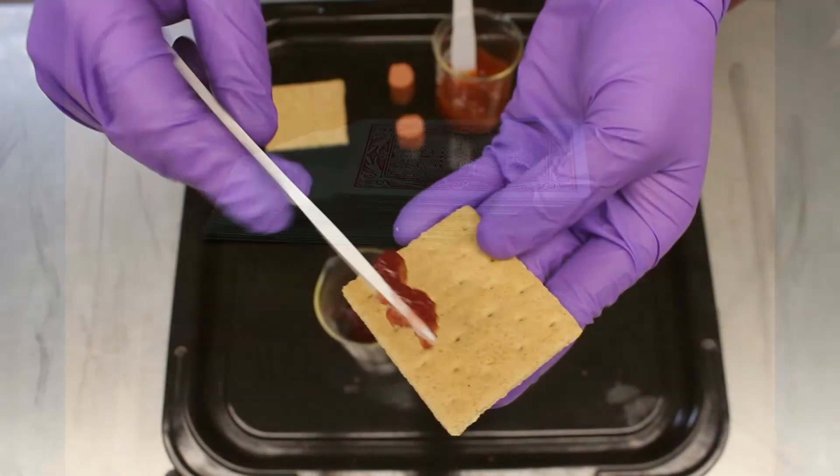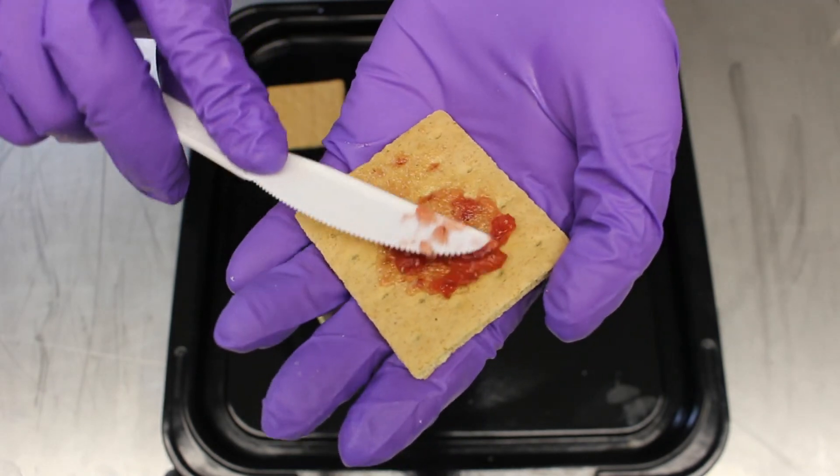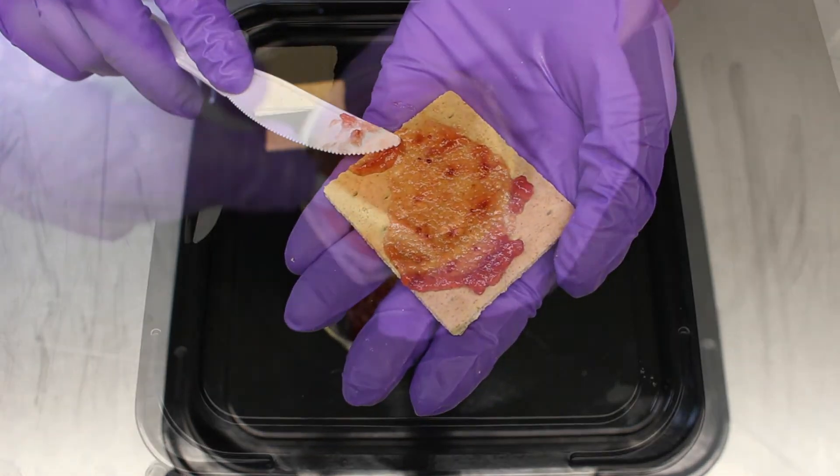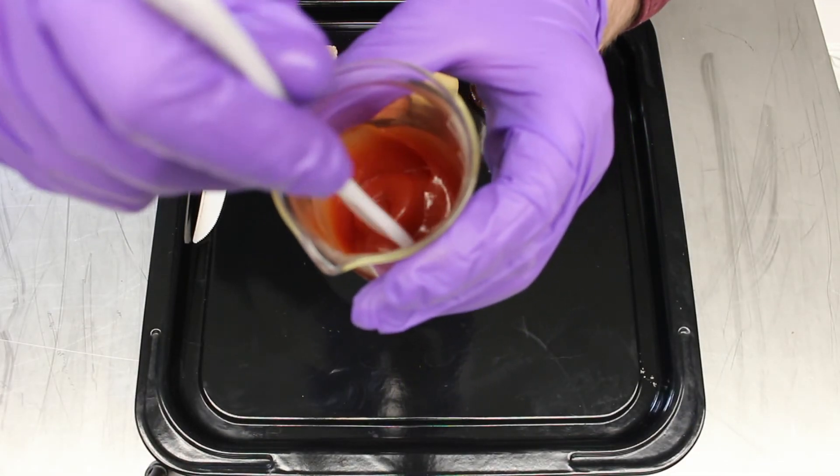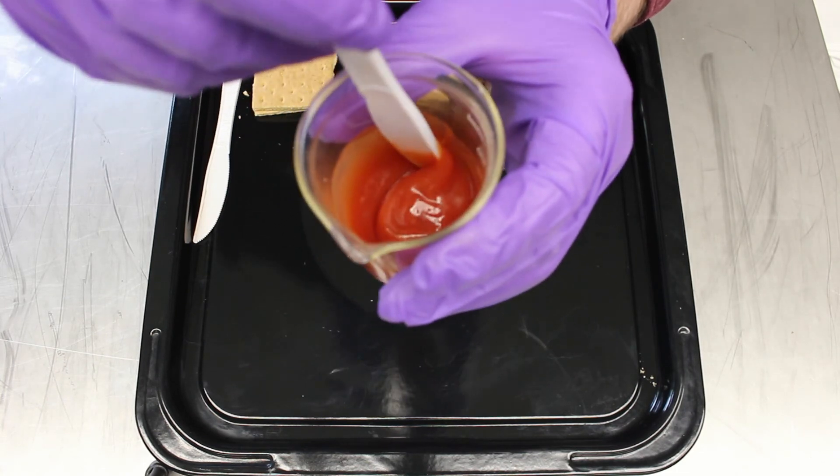A food example of shear stress is spreading jelly. As you apply stress parallel to the sample, it causes shear stress. Another example is stirring, in this case ketchup. As the ketchup is being stirred, it causes shear stress in the sample.